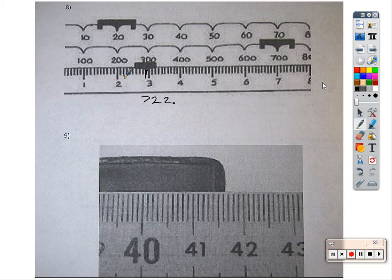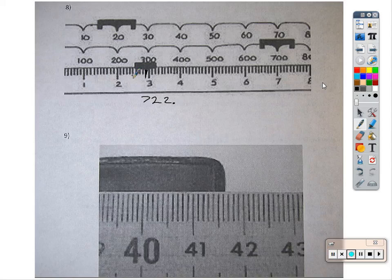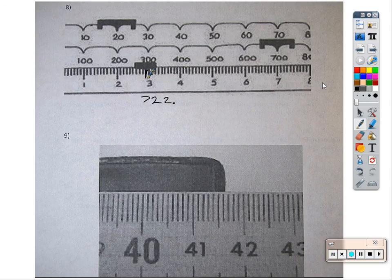That's .1, .2, .3, .4, .5, .6, .7, .8, .9. So we're somewhere around .9.